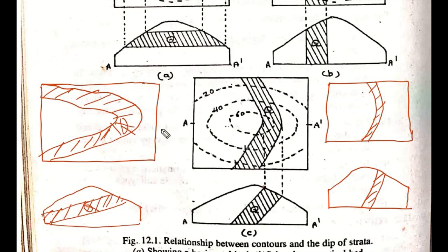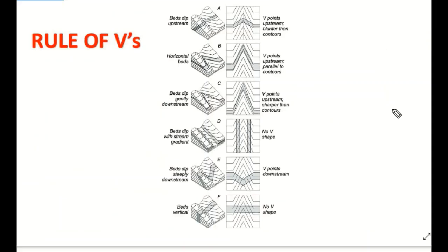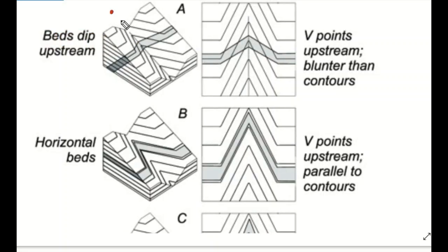From the context of the structure, we have to look at different basic rules — this is the V-rule. When we have a rock bed outcropped and the V is pointing upstream, we apply the V-rule. In the first figure, this is the upstream side and this is the downstream side. The outcrop V points upstream, which is the dip side. The contour line here is the blunter side where the slope is steep and this side is gentle.